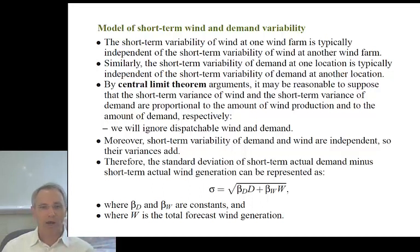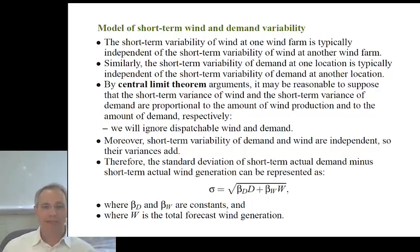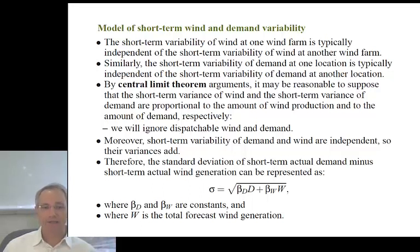For non-dispatchable generation such as wind, there are typically differences between actual generation and the short-term forecast used in economic dispatch. Similarly, demand deviates from its short-term forecast. Short-term variability of wind at one farm is typically independent of variability at another farm, and similarly for demand. Applying the central limit theorem, it's reasonable to suppose that the short-term variance of wind and demand are simply proportional to the amount of wind produced and to the amount of demand respectively.